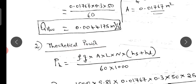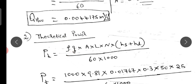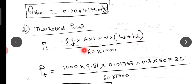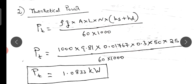Theoretical power: substituting the given values into the power formula using total head of 25 metres and theoretical discharge, the theoretical power required to run the pump is 1.0833 kW.